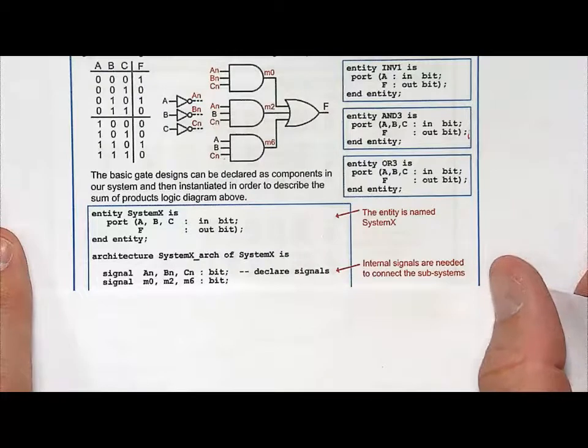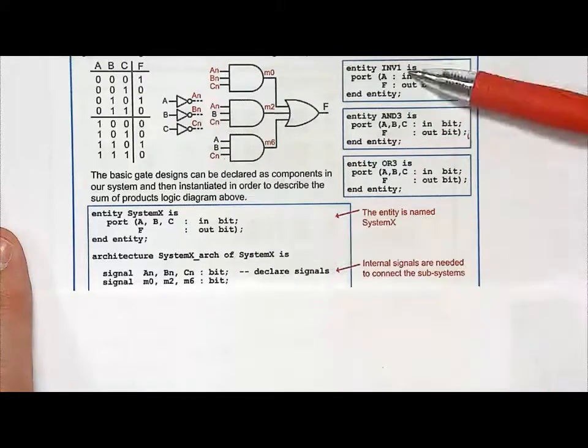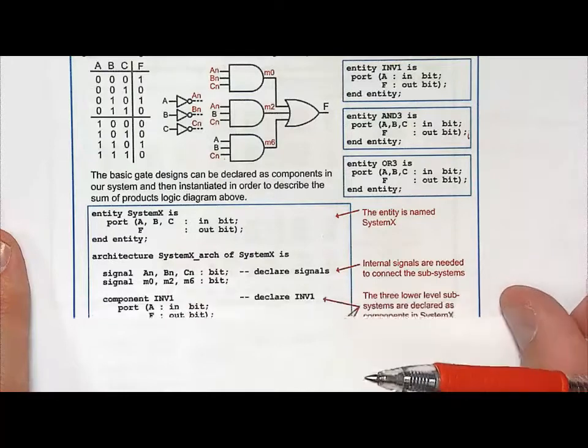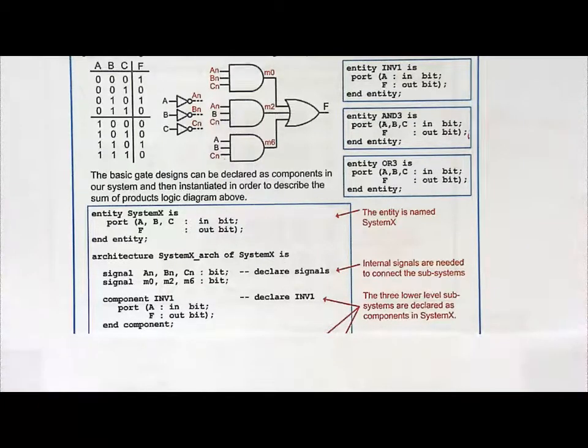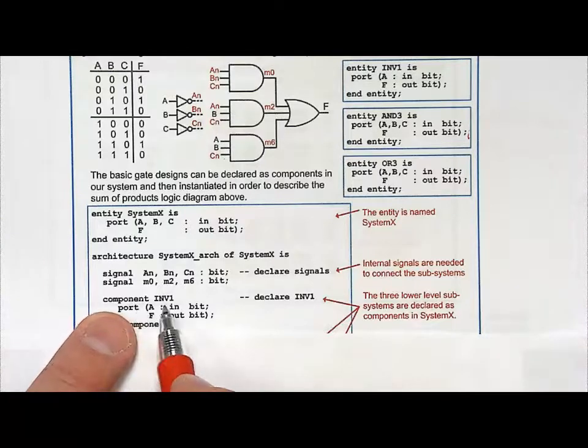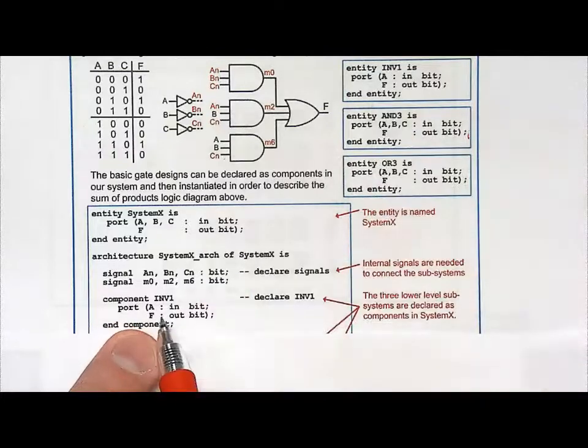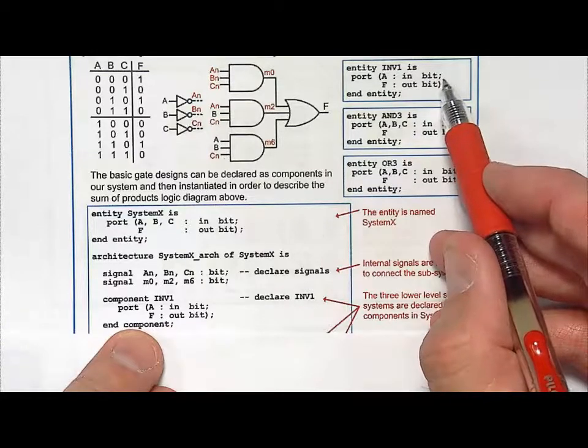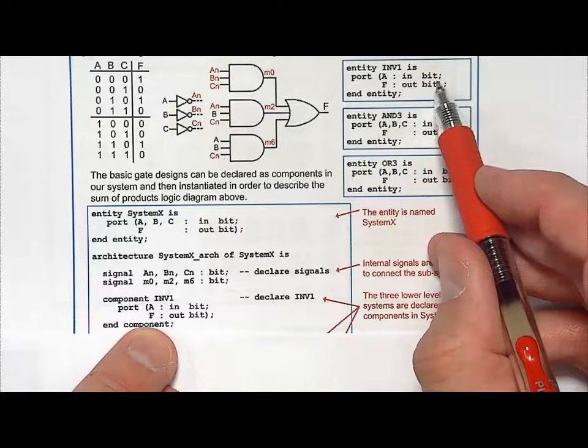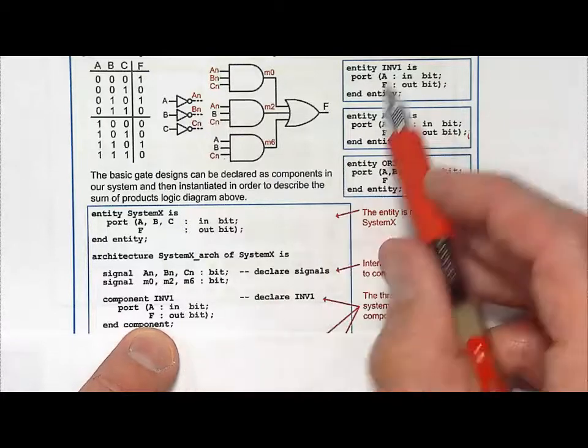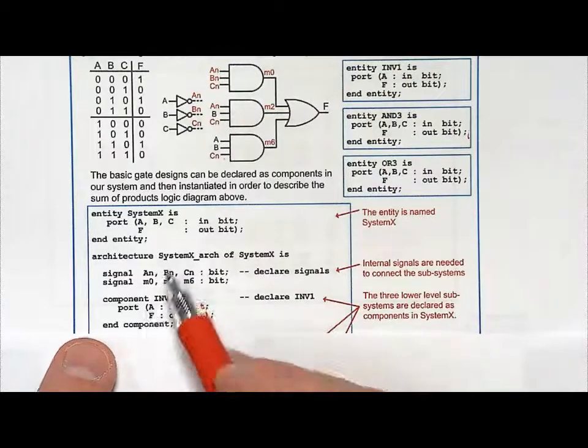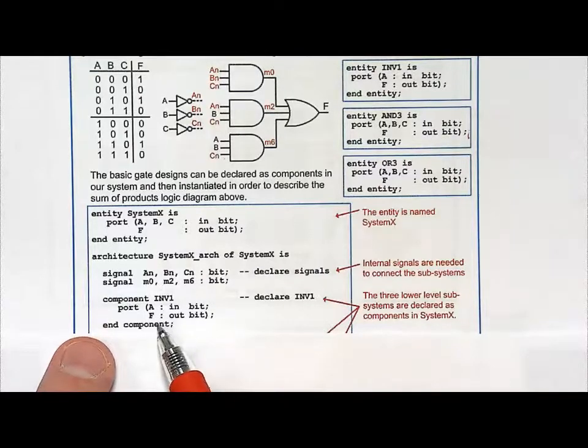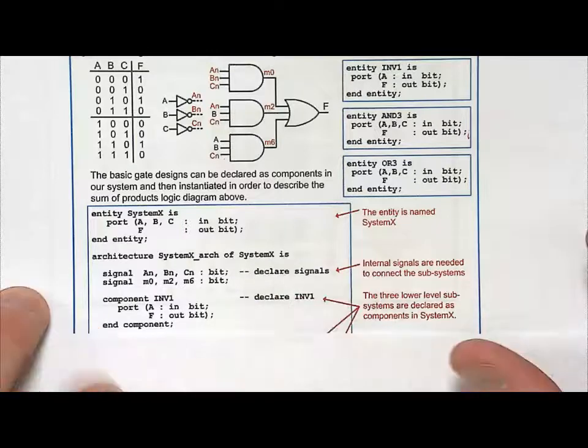Then we need to declare our components. So we need to tell this level that these three subsystems exist, and what their names is, and what the exact port definition is. So let's take a look at declaring the first component. So look at this. We're going to say keyword component, INV1. Notice it matches this exactly. Then we list out the port definition of that lower level component, and it is identical to the port definition in the lower level entity. In fact, when you do this, you almost always copy and paste this so that you don't make a mistake. So, but this, then we say end component. So now what I've told this VHDL file is that there is something out here called INV1. It's ports are like this, and I'm going to use it as a component. I might use it a million times. I might use it just once, but I'm going to use it.